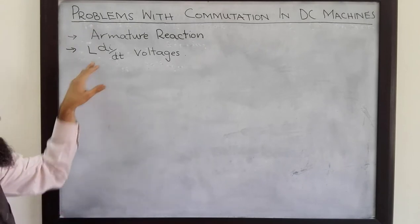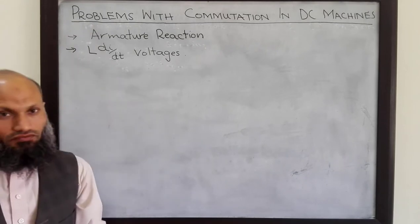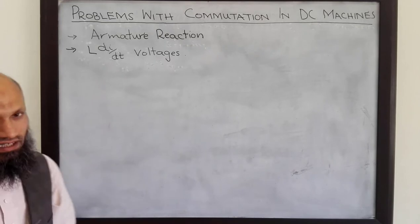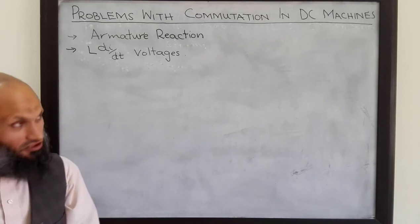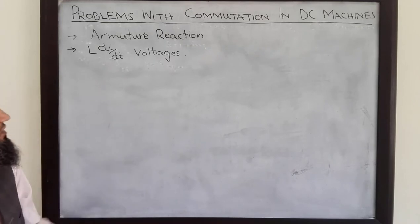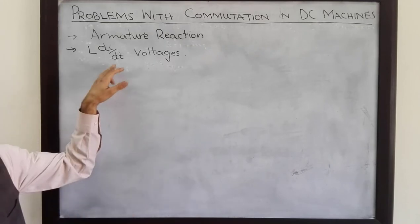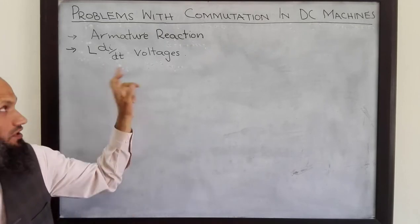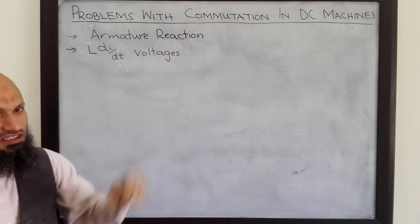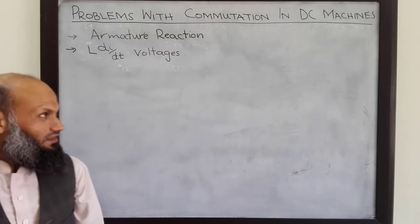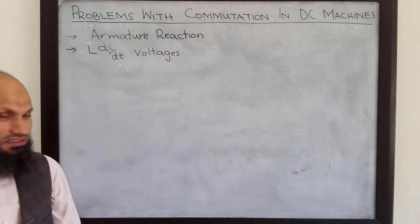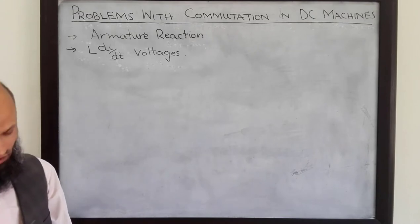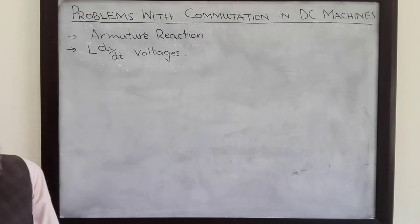And in today's lecture, we shall talk about the second problem, that is L di/dt voltages. To understand this problem associated with DC machines, let's consider the winding diagram of a lap wound DC machine.